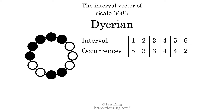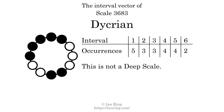There are two intervals with a size of six semitones, here and here. Each interval does not appear in this scale a unique number of times, so this is not a deep scale.